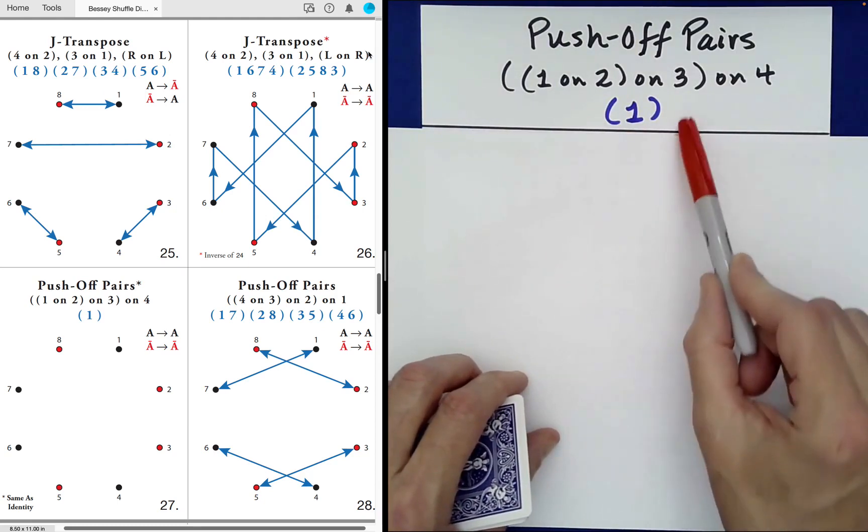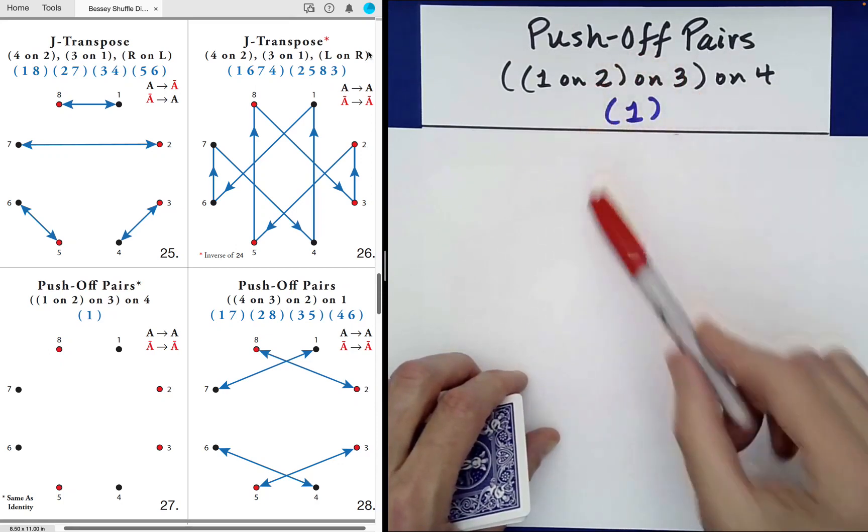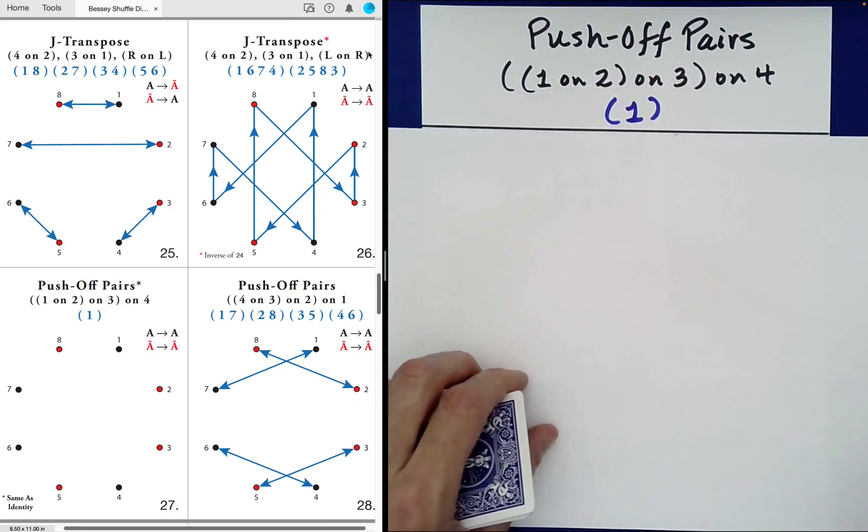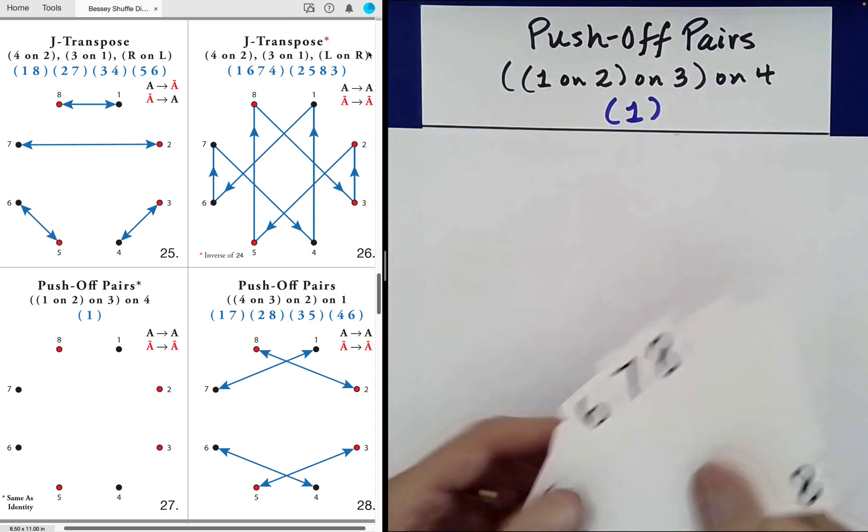We'll need to talk about what this means, but this is a way to represent the identity permutation, which means we really should get back to the original ordering of the cards. So let's go ahead and perform the shuffle and see what happens.